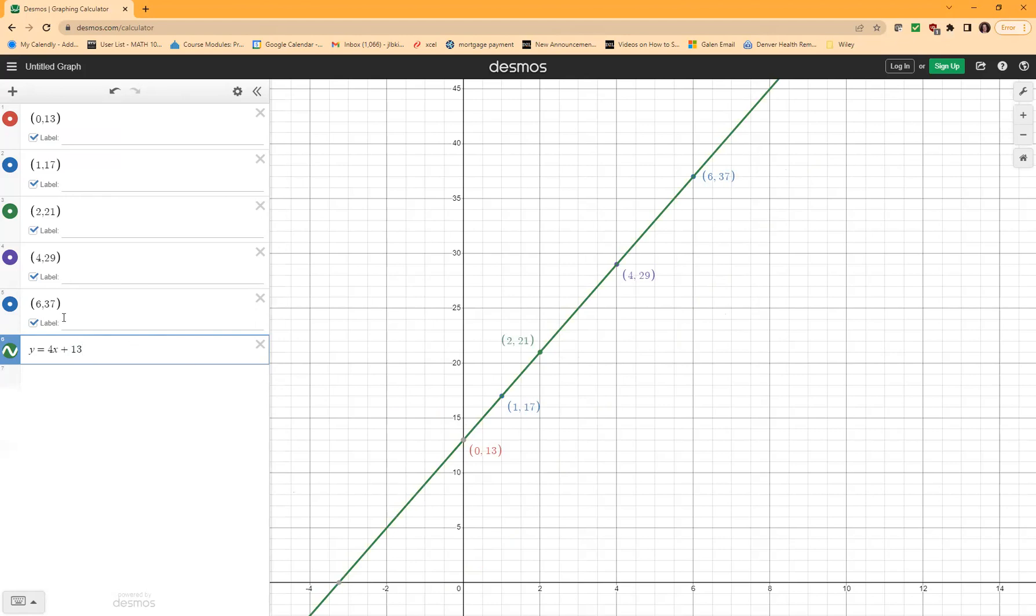Now notice, if I accidentally put in, say, a 39 here, that point would be off, and we would know that either our equation is completely wrong or the point's wrong. And since it's only one point that's not on the line, we'd know that we've probably made an error in the point.